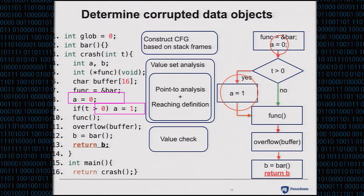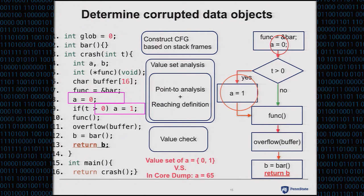After obtaining the value sets of data objects, we do our last step: value check. We extract the value of an object from the core dump and check if it falls into the value set we analyzed. If it does not, the data object must have been unintentionally modified — namely, corrupted. For example here, variable a has a legal value set of zero and one, but in the core dump the value of a equals 65. Obviously this falls outside the value set, so we conclude that a is a corrupted data object.